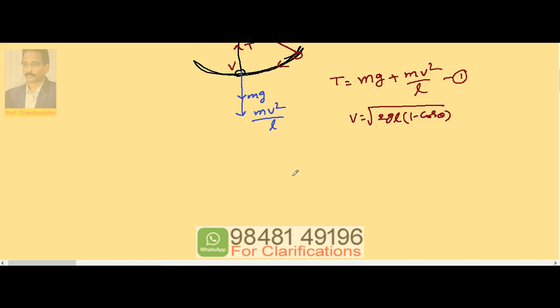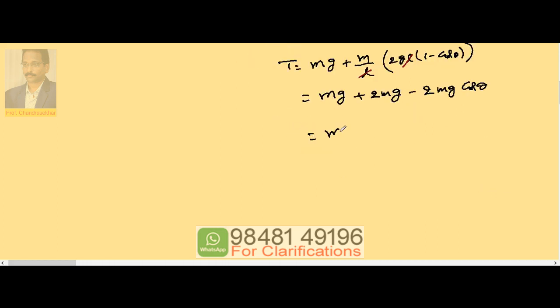Substitution into first equation gives T becomes equal to Mg plus M by L times 2gL(1 - cosθ). So L and L gets cancelled. Therefore this is Mg plus 2mg minus 2mg cosθ. So if I take Mg common, then this becomes 3 minus 2 cosθ. This is the general equation for tension when the simple pendulum is pulled through an angle theta and then released.